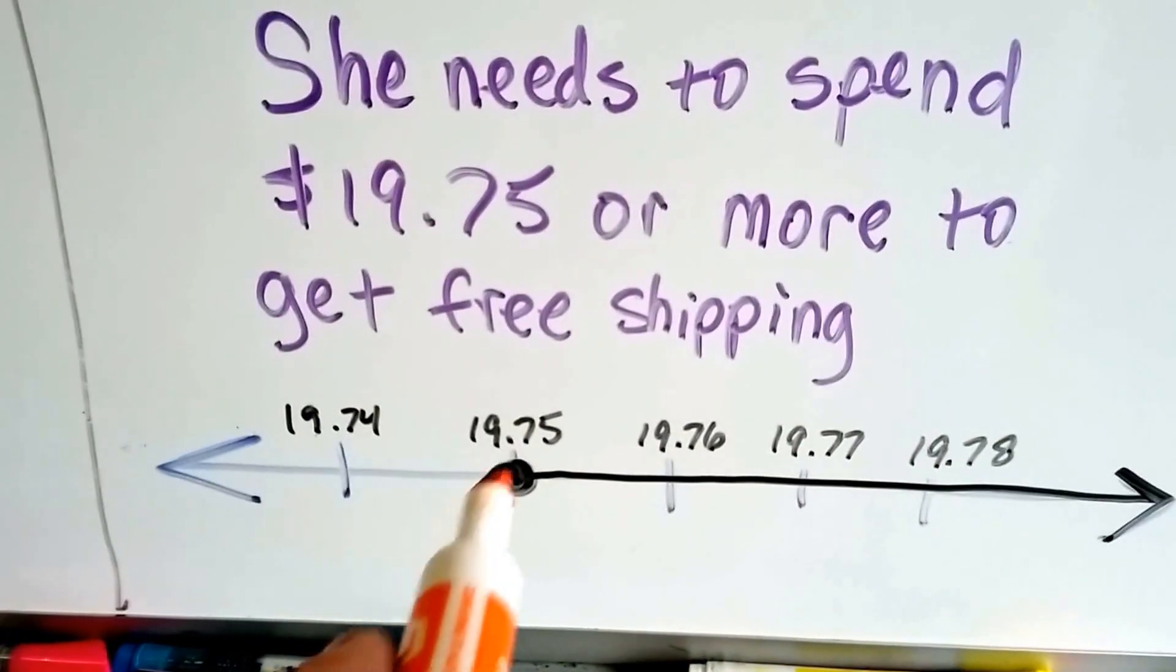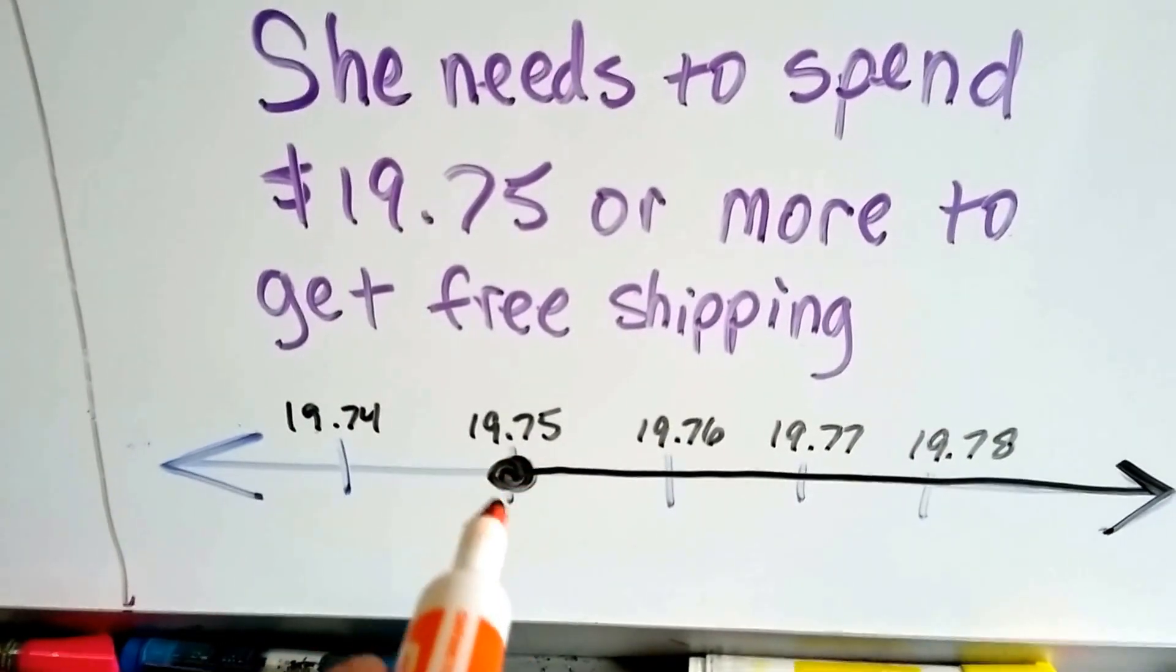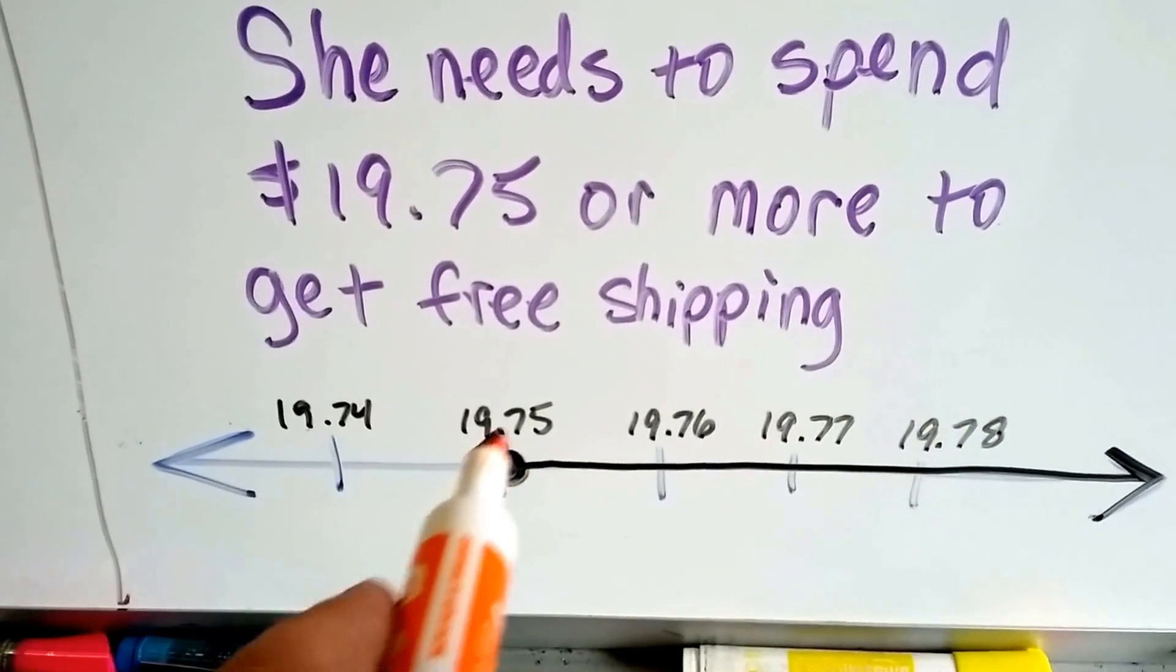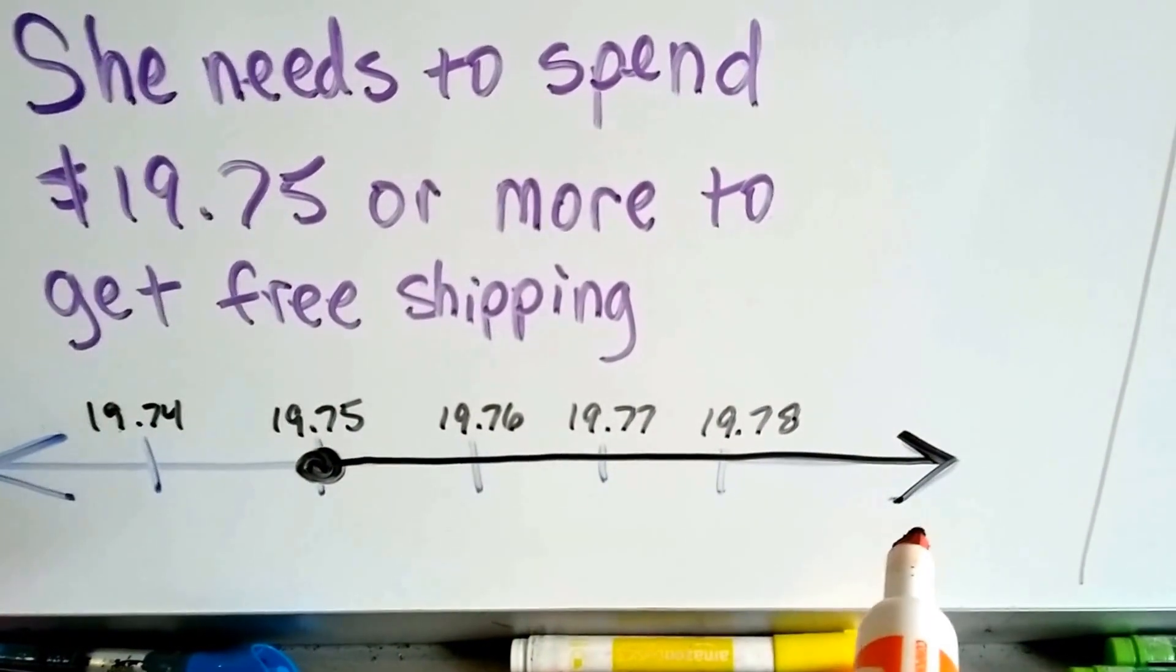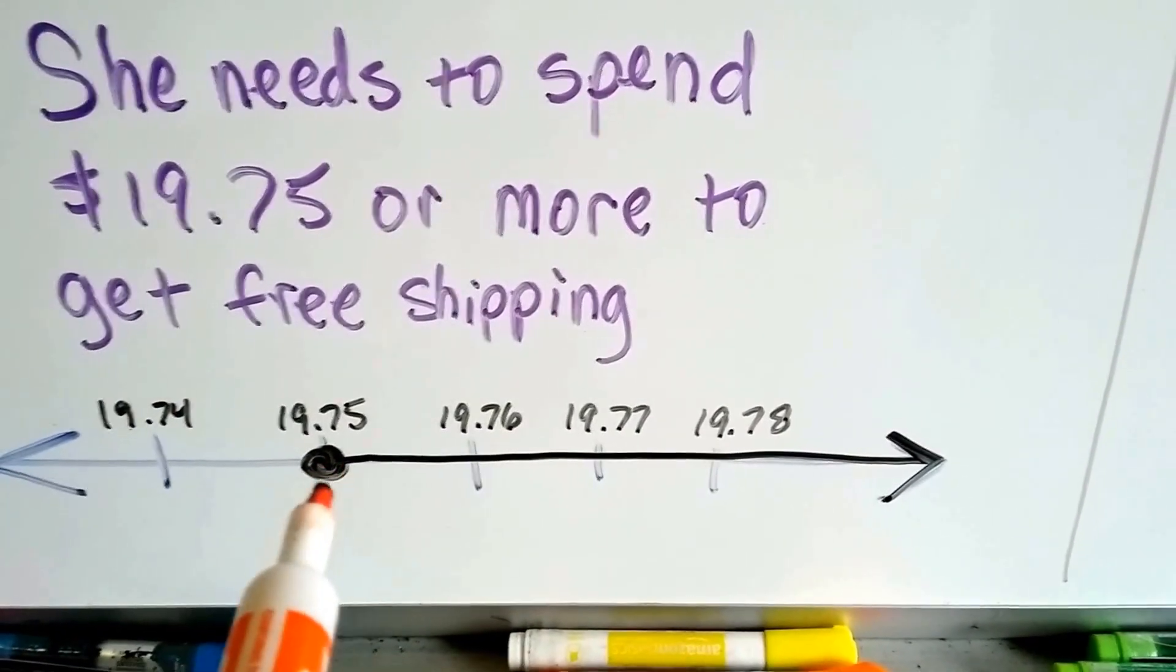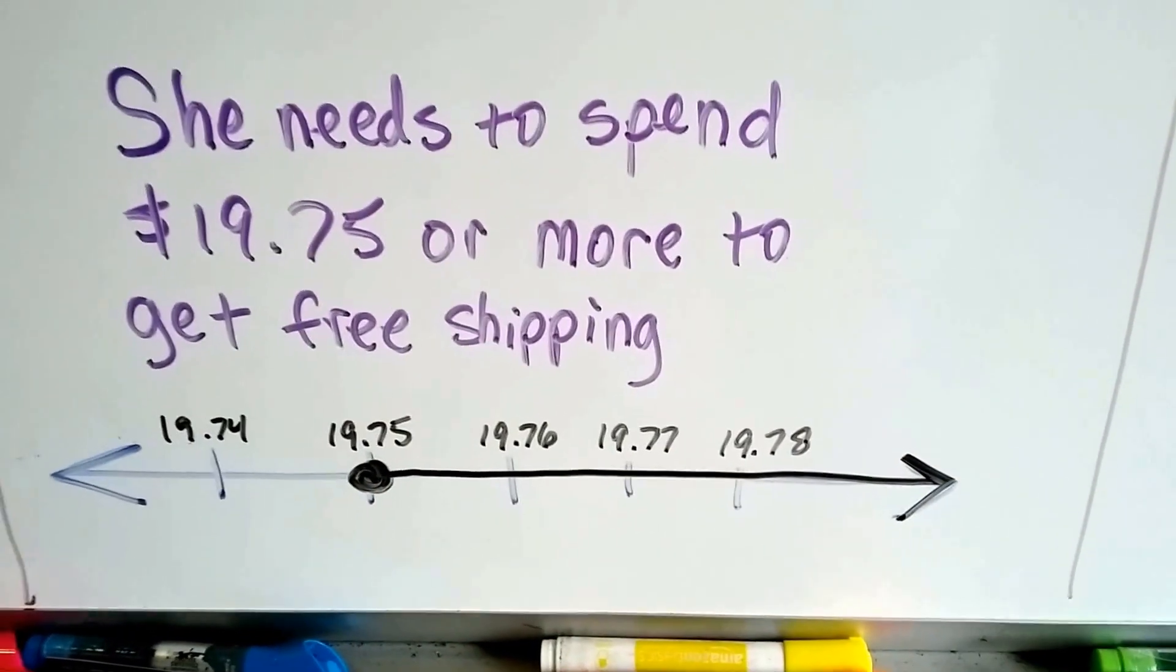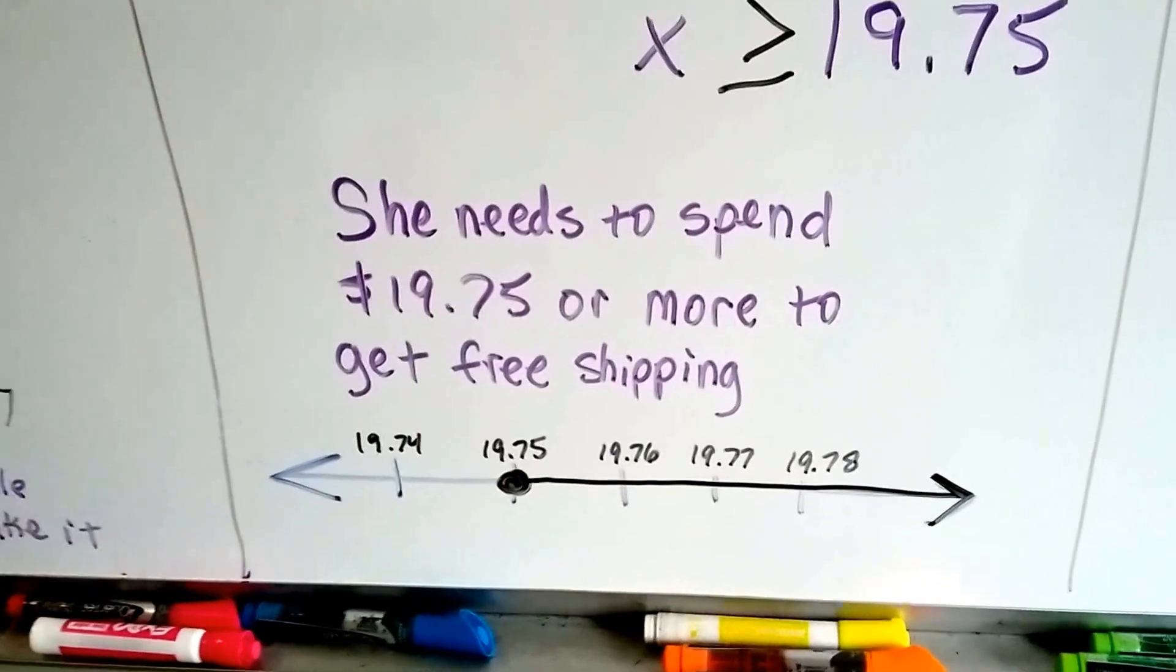To graph it, we put a dot on the $19.75 because it includes $19.75 and we draw an arrow showing the greater amount. She can spend $19.75 or more to qualify for the free shipping.